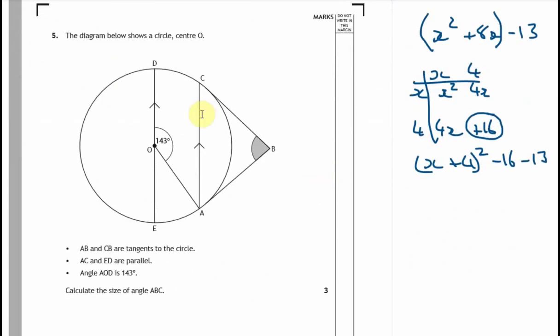So the diagram below shows a circle. I really enjoy these questions, they're always quite interesting. It's just interesting seeing how people solve them. Let's see what we've got: A, B, and C, D. A, B, and C, B are tangents to the circle. Now the minute you see tangents, I'm going to highlight them in orange.